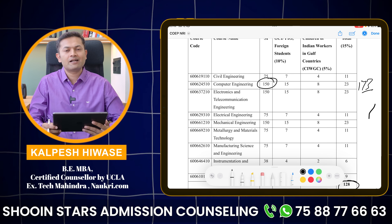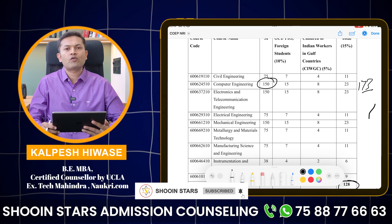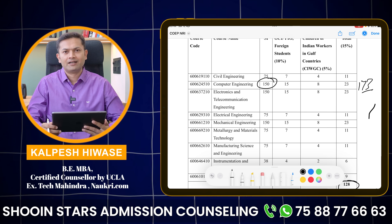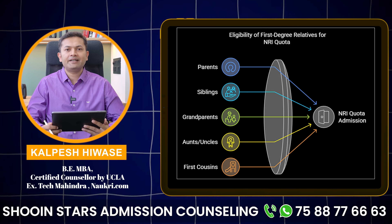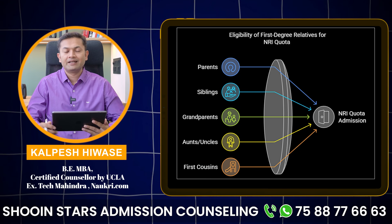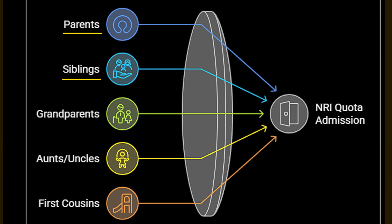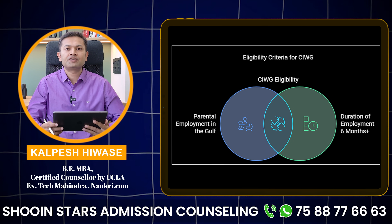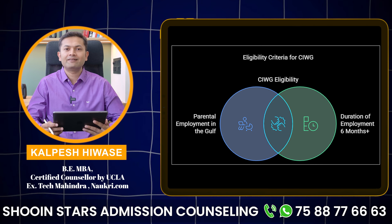We need to understand what this CIWG and NRI concept is. Under the MHT-CET admission process, it is not a compulsory requirement that you yourself should be an NRI. It is absolutely fine even if your parents, siblings, grandparents, uncle-aunties and cousins are NRIs — using the concept called first-degree blood relatives. For CIWG, which stands for Children of Indian Workers in Gulf, either of your parents should be working in the Gulf for more than 6 months.